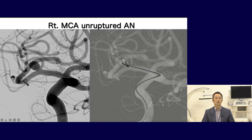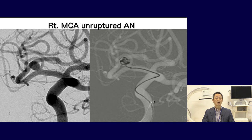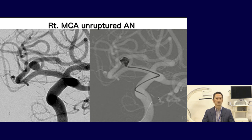This case is an MCA unruptured aneurysm with a wide neck shape. Initially, coil loops were coming into the parent artery, so I changed the catheter tip position out of the neck. At this position, coil loops went into the dome, and I was able to make the coil frame with a simple technique.